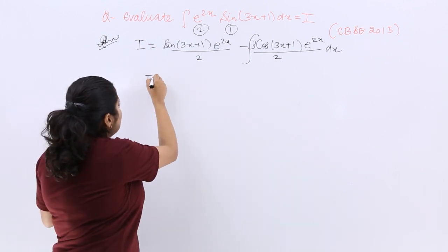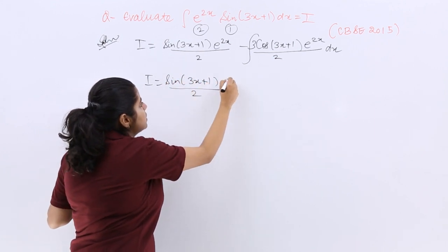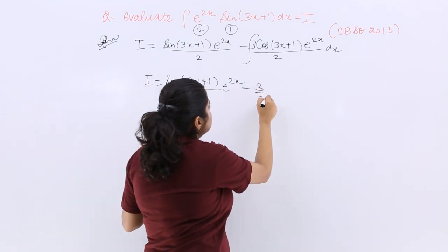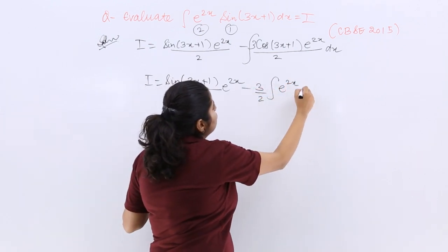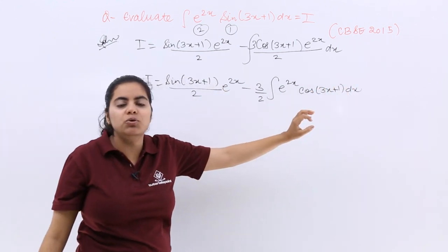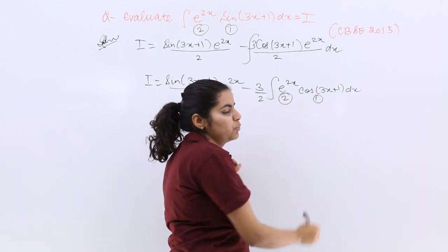Next, I should be continuing: sin(3x+1) upon 2 e raised to the power 2x minus constants kept outside, e raised to the power 2x cos(3x+1) dx. Now see which should be treated as the first function: trigonometric. Second would be exponential.